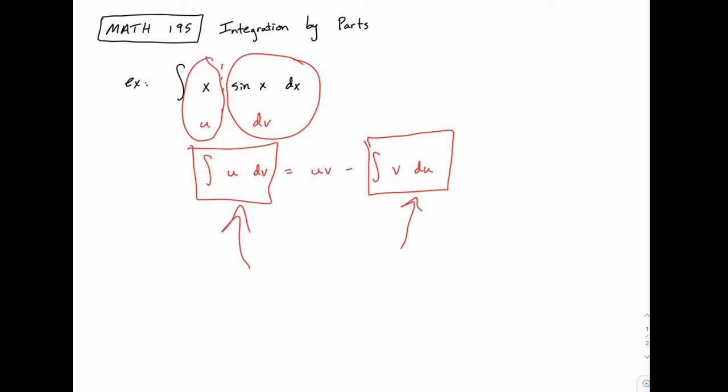So the general approach is we're going to define u and dv, and then we'll find what v and du are. You may already be guessing how we're going to do that, but we'll save that for just a minute. And once we find those, then we'll plug everything into this formula, and this second integral will be one that we know how to do. So that's the general structure of one of these problems.